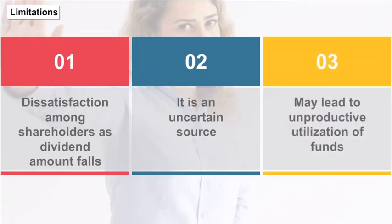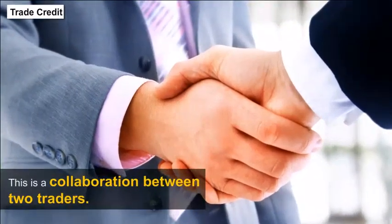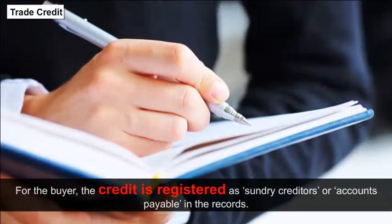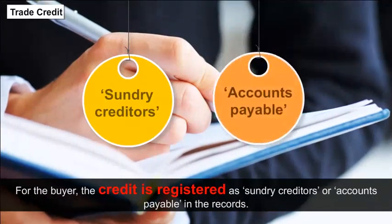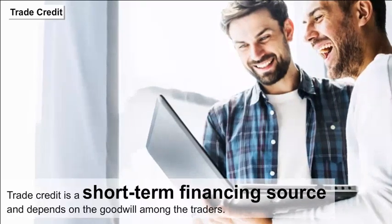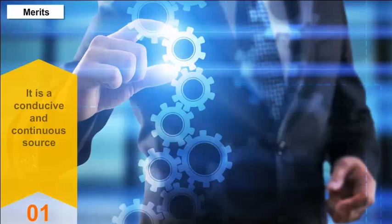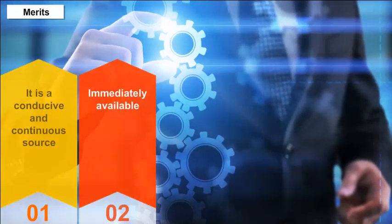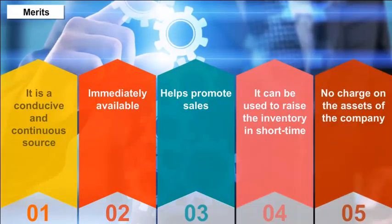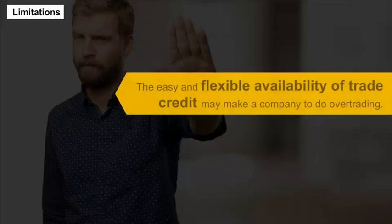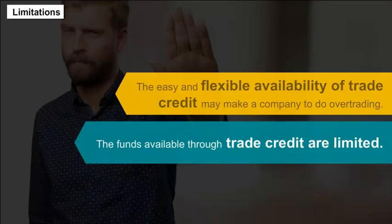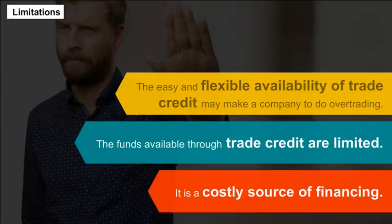Limitations of retained earnings include shareholder dissatisfaction as dividend amounts fall, being an uncertain source, and potentially leading to unproductive utilization of funds. Trade credit is a collaboration between two traders where one gives credit for the purchase of goods and services to the other, recorded as sundry creditors in the buyer's books. It is a short-term source depending on goodwill. Merits: continuously available, promotes sales, raises inventory quickly, and no charge on company assets. Limitations: may encourage over-trading, limited funds, and can be costly.